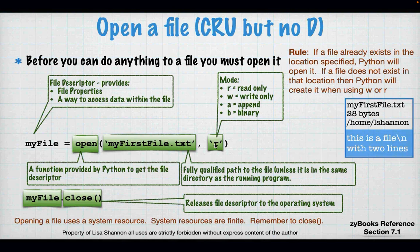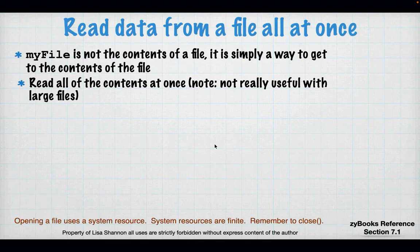Quick rule: if a file already exists in a location, Python will open it. If it does not exist in a location, Python will create it when using the W or R mode. Opening a file uses system resources. System resources are finite — remember to close the file. Always remember to close the file.